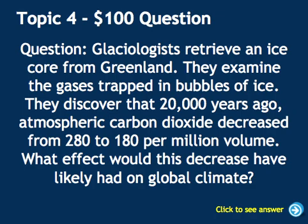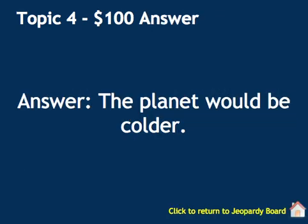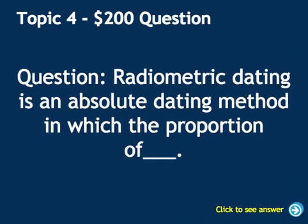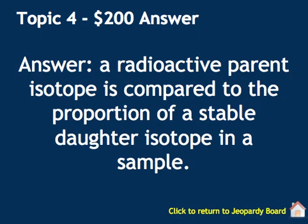Glaciologists retrieve an ice core from Greenland and examine gases trapped in bubbles of ice. They discover that 20,000 years ago, atmospheric carbon dioxide decreased from 280 to 180 parts per million volume. What effect would this decrease have on global climate? Carbon dioxide helps keep our planet warm, so if CO₂ decreased back then, the planet would have gotten colder — likely experiencing something like an ice age. Radiometric dating is an absolute dating method in which the proportion of a radioactive parent isotope is compared to the proportion of a stable daughter isotope in a sample.